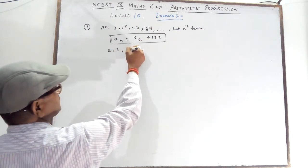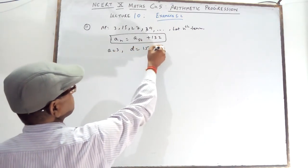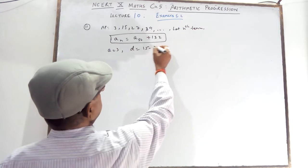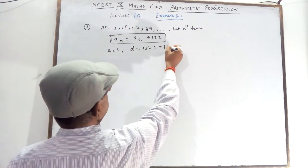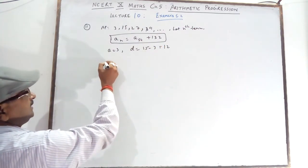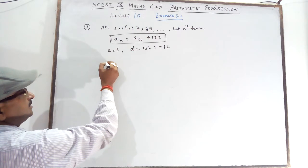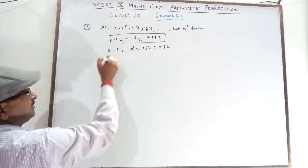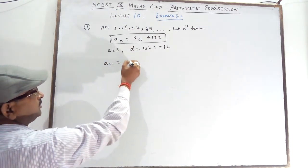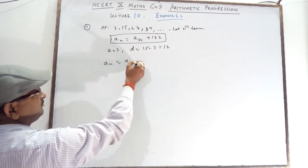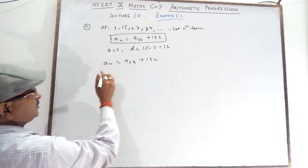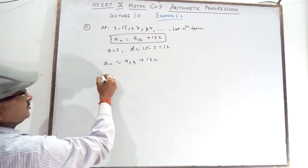What is D? 15 minus 3, which gives 12. What is An? Now put the values here. An is equal to A54 plus 132.